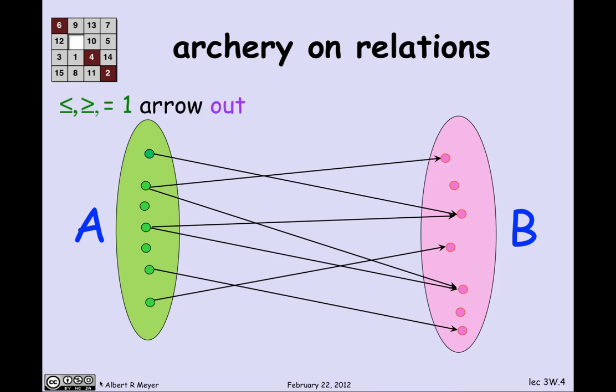The general idea of archery on relations pursues this function idea. We're going to classify relations according to how many arrows come out of domain elements in three categories: at most one arrow out, exactly one arrow out, or at least one arrow out of every domain element. Symmetrically, we're going to classify relations with respect to codomains in the same way: every codomain element has greater than or equal to one arrow in, exactly one arrow in, or at most one arrow in. Various combinations of these things have standard names which you'll need to know.